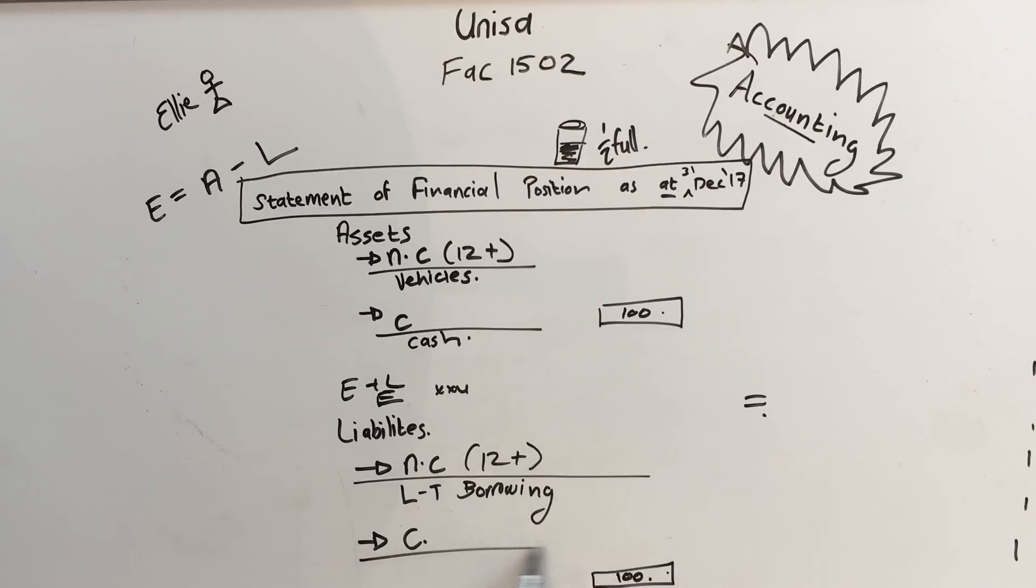A current liability is a liability or a debt that we have to pay within the next 12 months. So let's say we bought our stuff for the pizza on credit. We used a credit card or we had an account with Checkers and we bought all the flour and cheese on credit. That means we owe them that money and we have to pay them back within 12 months. So it's a current liability.